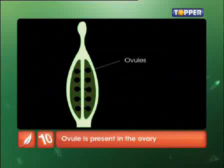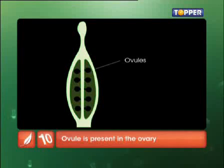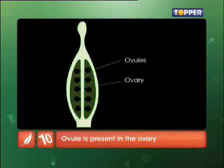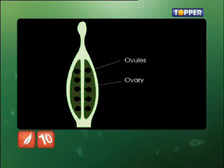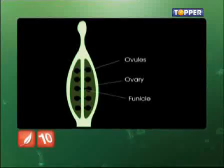And seed formation. To understand the process of pollination, we should first know the anatomy of an ovule. An ovule is a small structure contained in the ovary. Each ovule is attached to the placenta by a stalk called the funicle, which provides nourishment to the ovule.